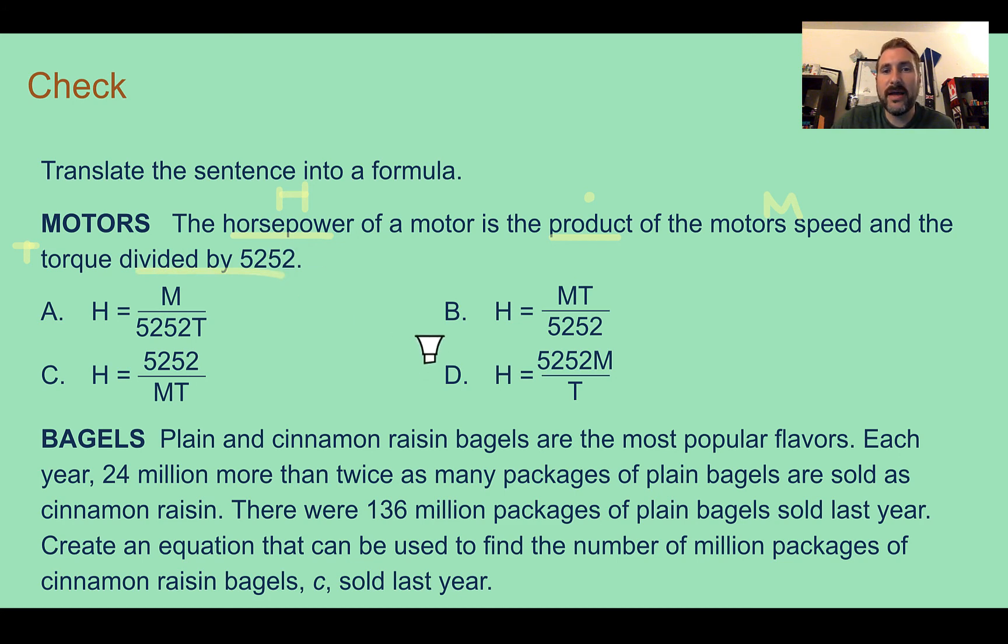So they used M and T divided by 5,252. So which of these is showing that? That would be B. M times T divided by 5,252. If we look at the other choices, C and D don't make sense because you're not dividing by 5,252.